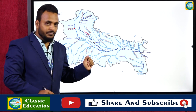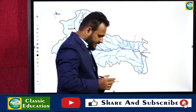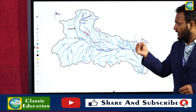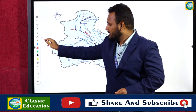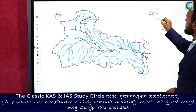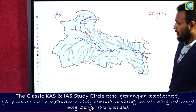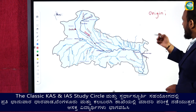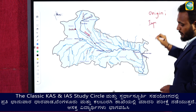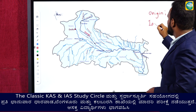We need to understand certain parts when concentrating on particular river systems. In the examination, they would definitely ask you where does the river get its origin — that is the first point called origin or source point. They may also ask about important dams on the river, and about left bank tributaries as well as right bank tributaries.